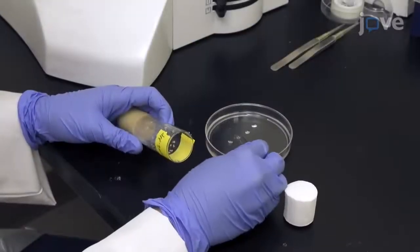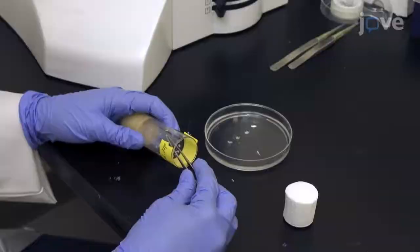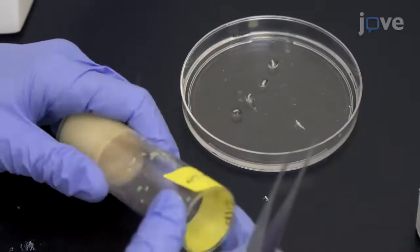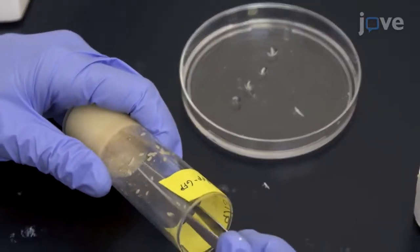Then select the appropriate larvae for dissection. First, choose larvae that are non-TB, which will be normal length rather than short and fat.